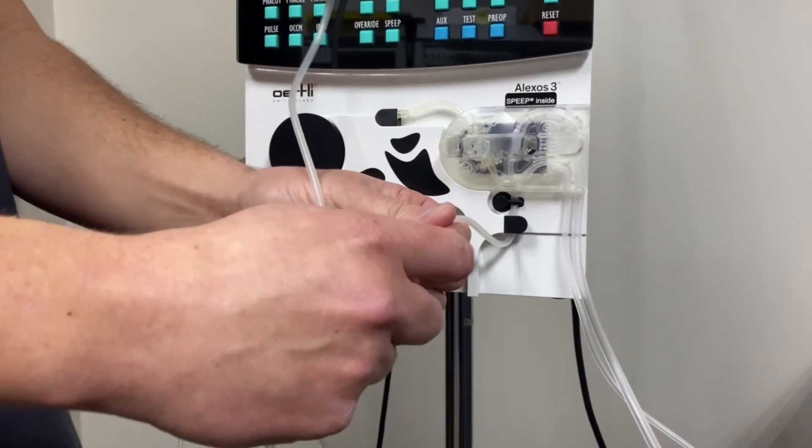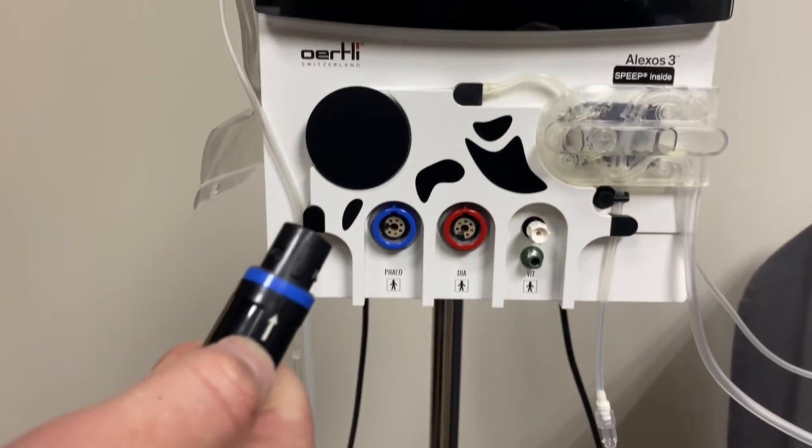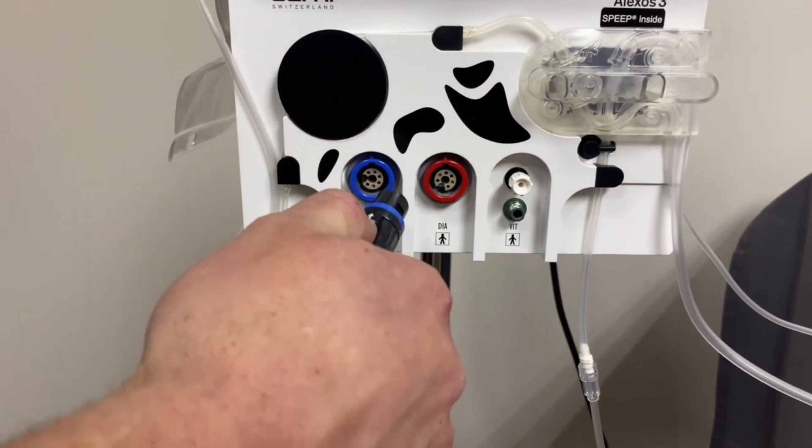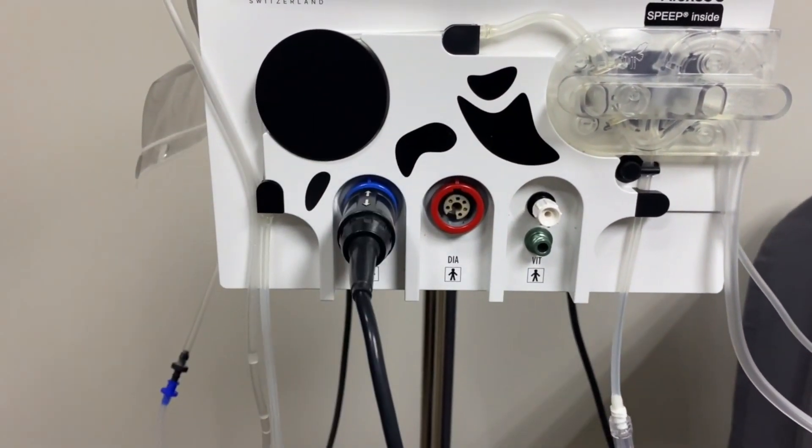Connect the FACO handpiece to the Alaxos 3 device. The plug of the FACO handpiece has a blue ring that matches the plug with the blue ring on the machine. The arrows must be visible once connected. Please note that the tubing that connects to the FACO handpiece must be kept sterile.